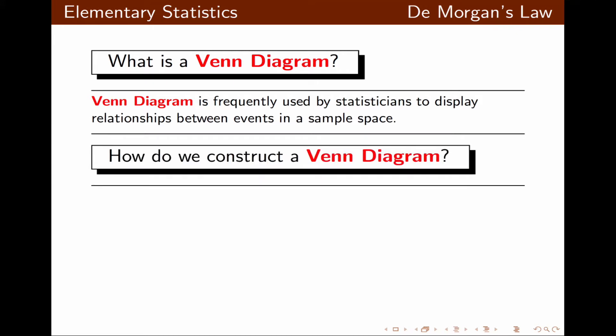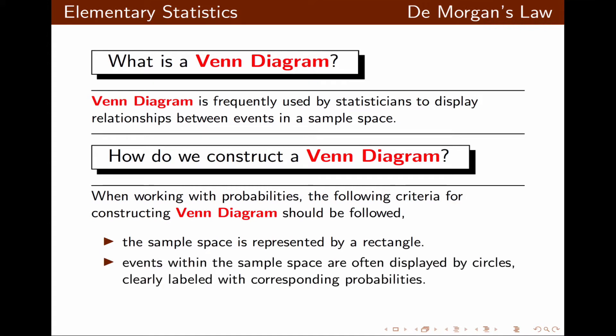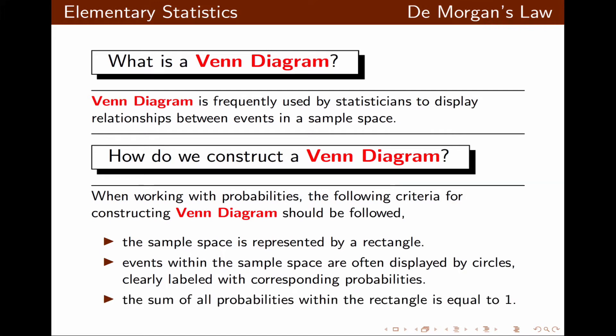When working with probabilities, Venn Diagrams allow us to organize our probabilities. We place the sample space inside of a rectangle, and events within the sample space are usually displayed by circles. Each circle is properly labeled with the names as well as the corresponding probabilities. Keep in mind, the sum of all probabilities inside of the rectangle should be equal to 1.